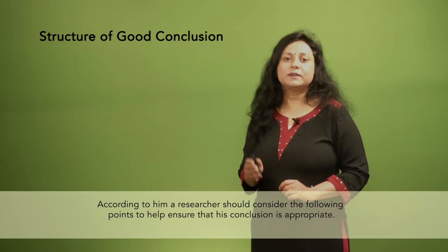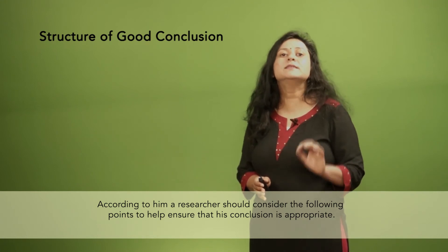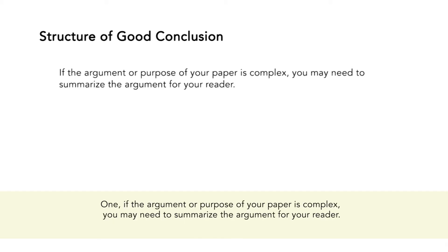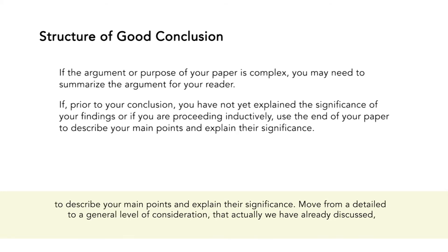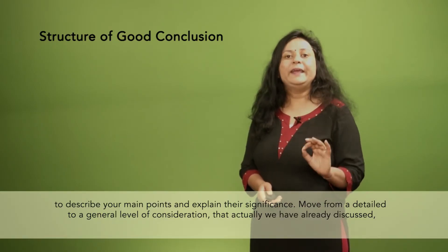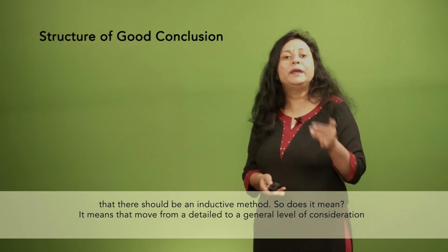According to Hassan, a researcher should consider the following points to help ensure that his conclusion is appropriate. First, if the argument or purpose of your paper is complex, you may need to summarize the argument for the reader. Second, if prior to your conclusion you have not yet explained the significance of your findings, or if you are proceeding inductively, use the end of your paper to describe your main points and explain their significance. Move from a detailed to a general level of consideration that returns to the context provided by the introduction or within a new context that emerges from the data.